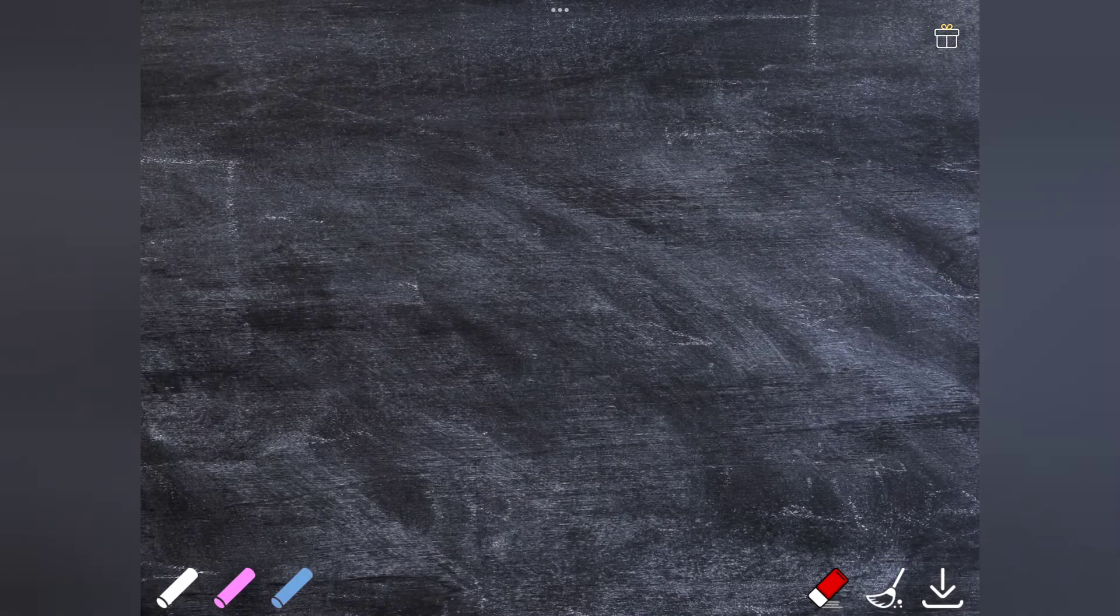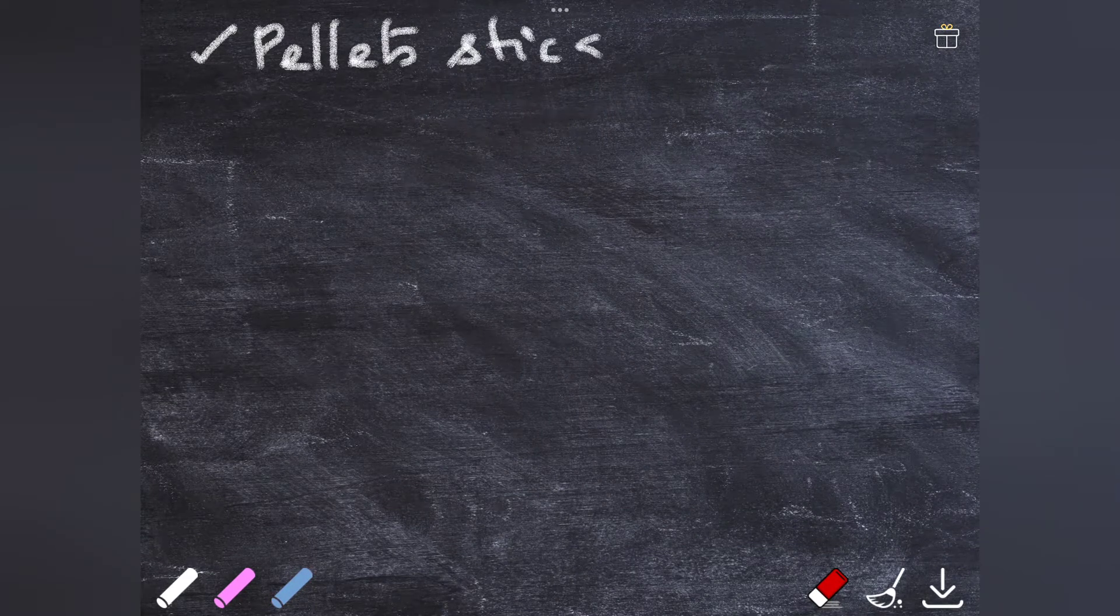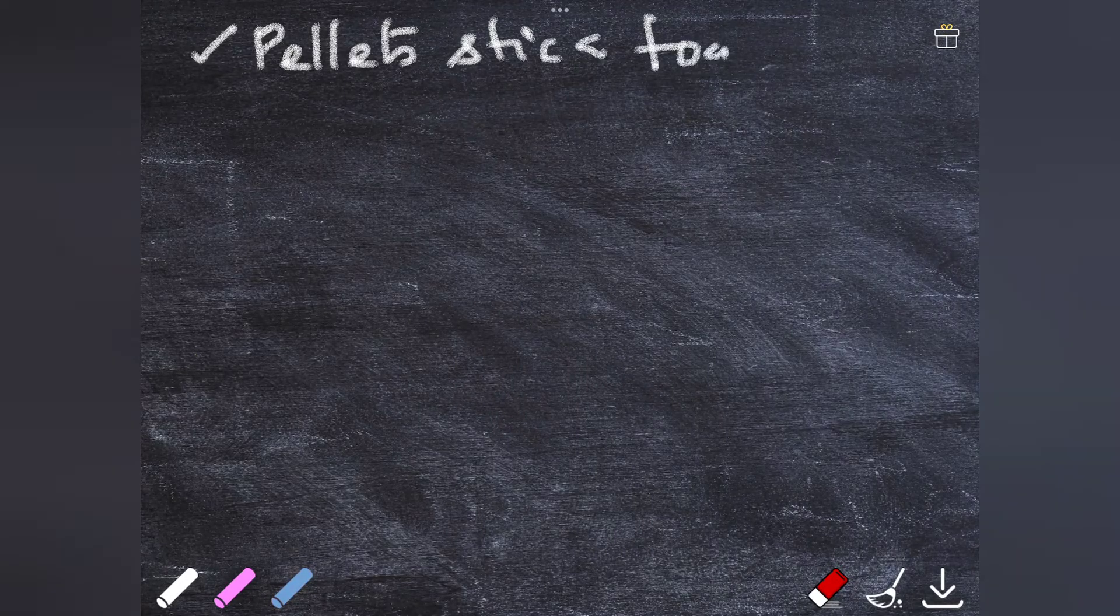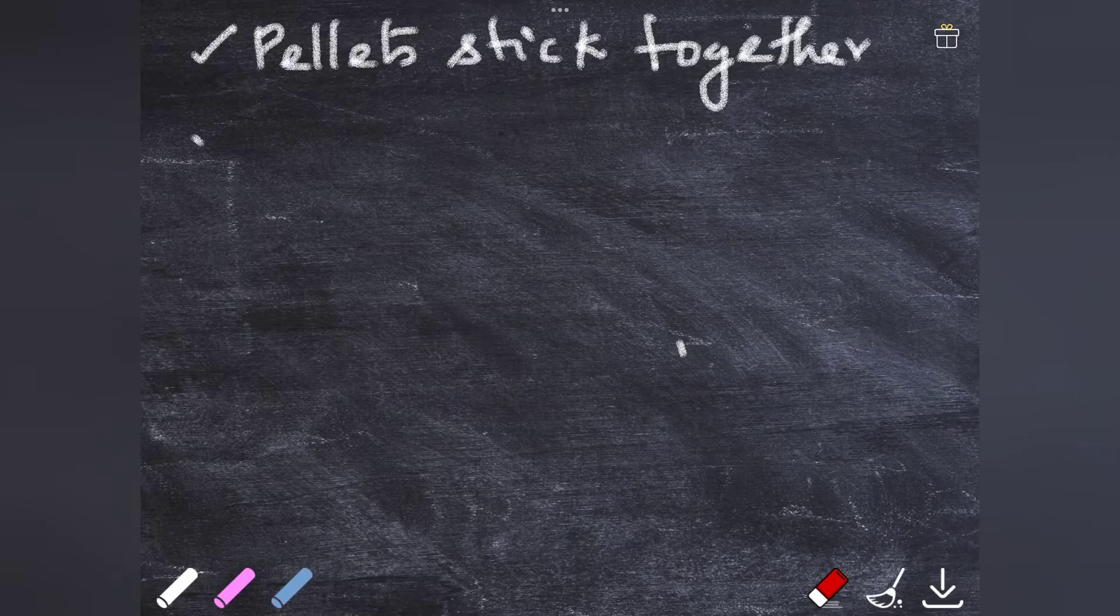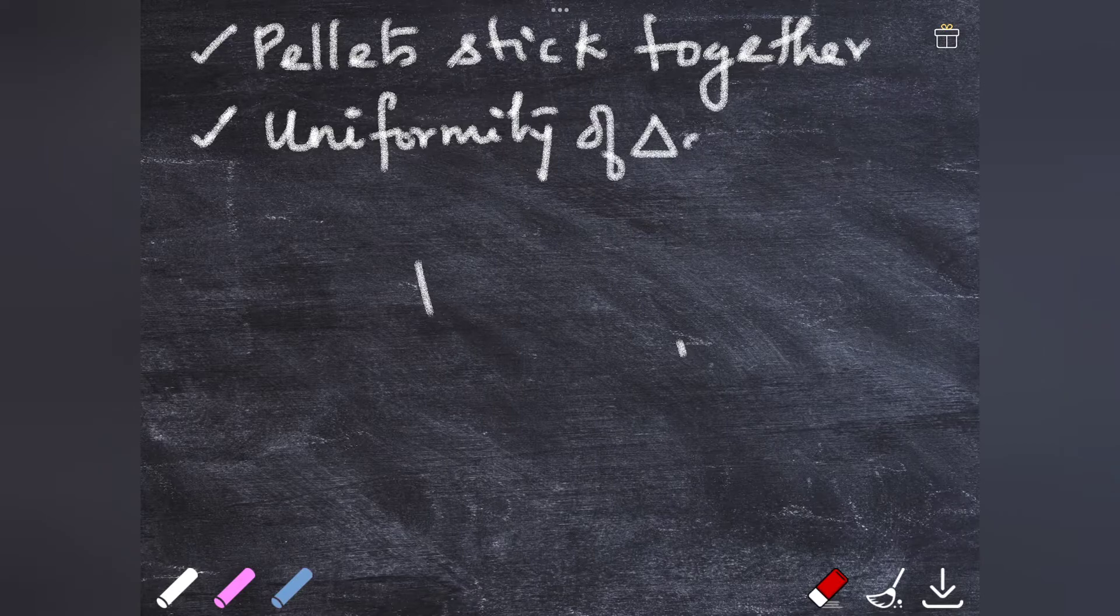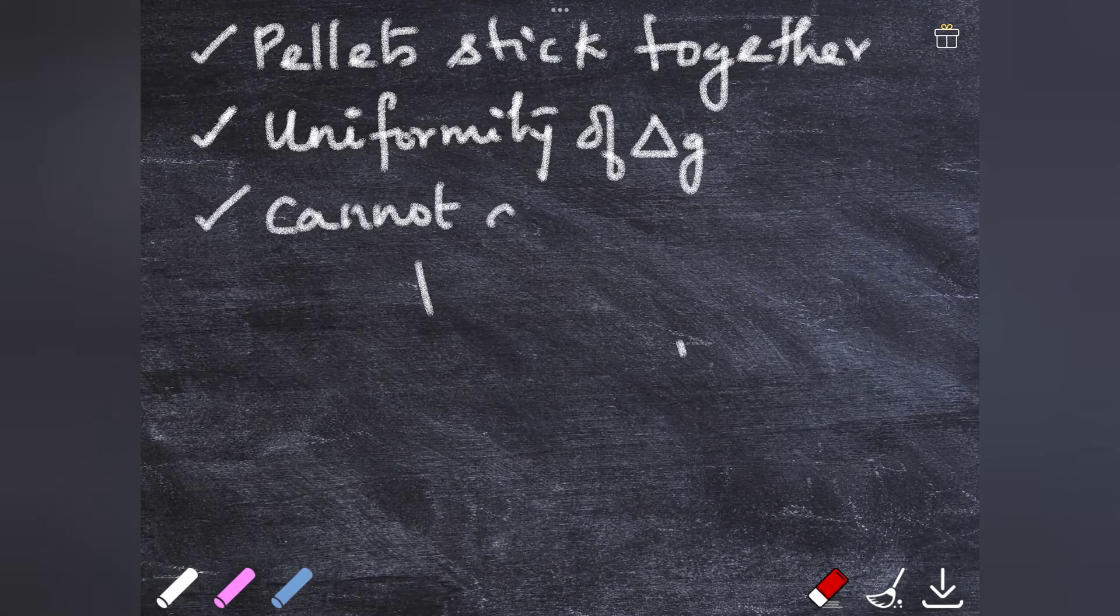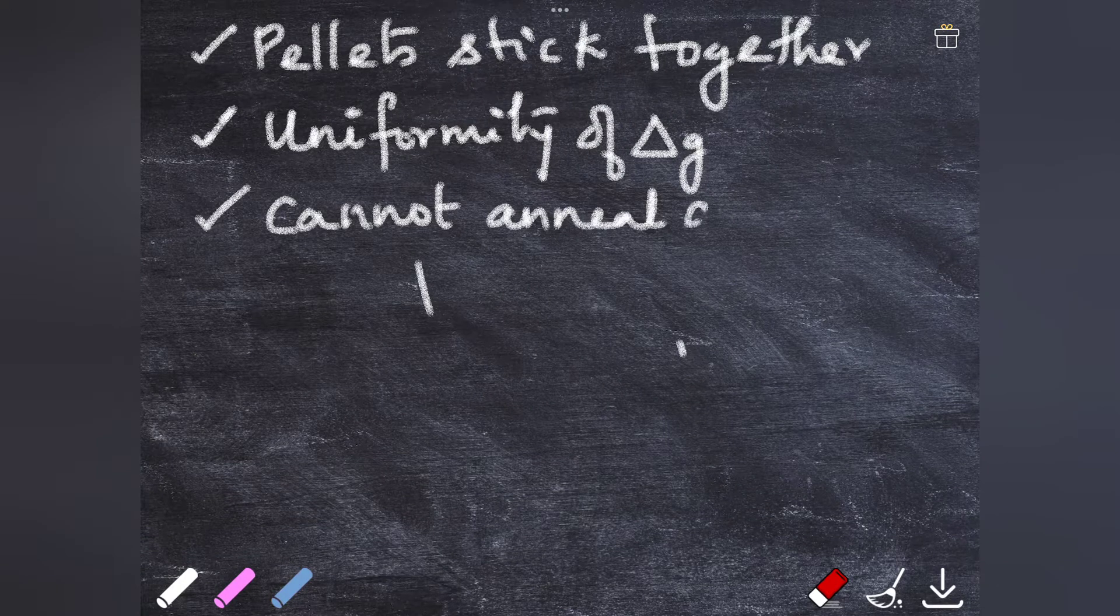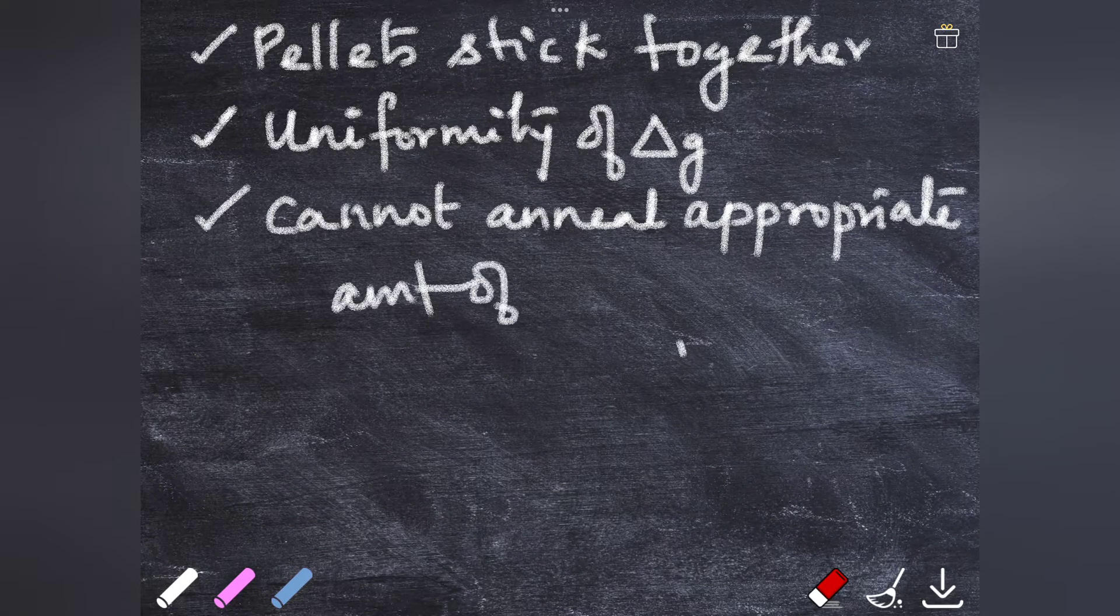Are there any problems encountered during electric annealing? Yes, there are a lot of problems. The first one is if the tray moves when the gold is heated, it's going to stick together - all the pellets will stick together giving a clump. If any air current comes, it's going to cause non-uniform heating, affecting the uniformity of the heating. We cannot anneal an appropriate amount.